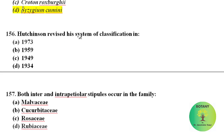Hutchinson revised his system of classification — first published in 1926, then revised in 1948, then in 1959, then 1969, and finally he revised his system of classification in 1973. So the correct answer is 1973.